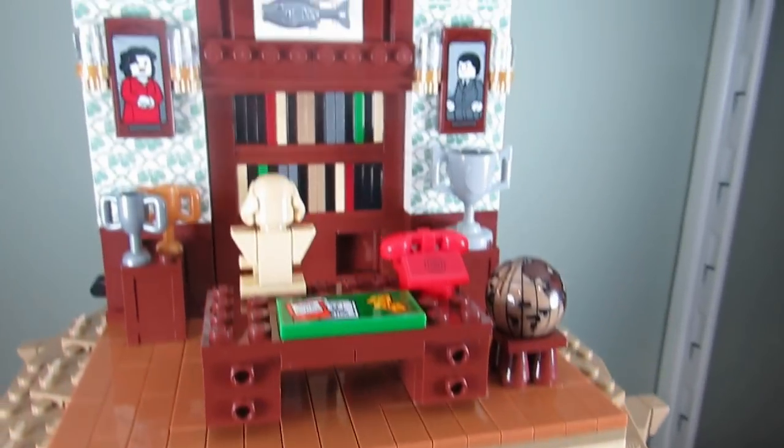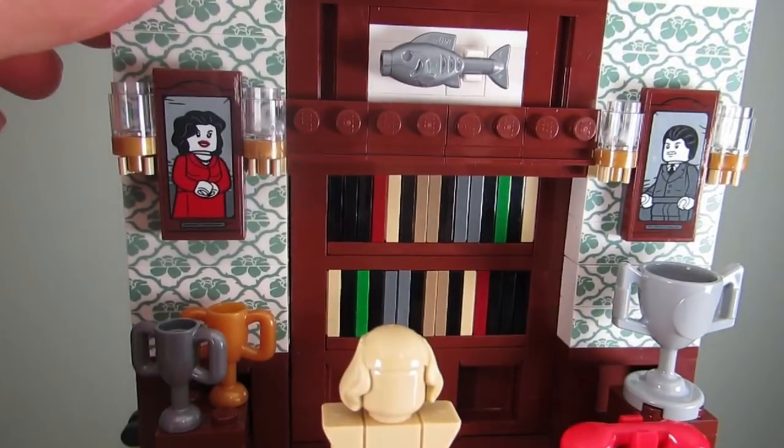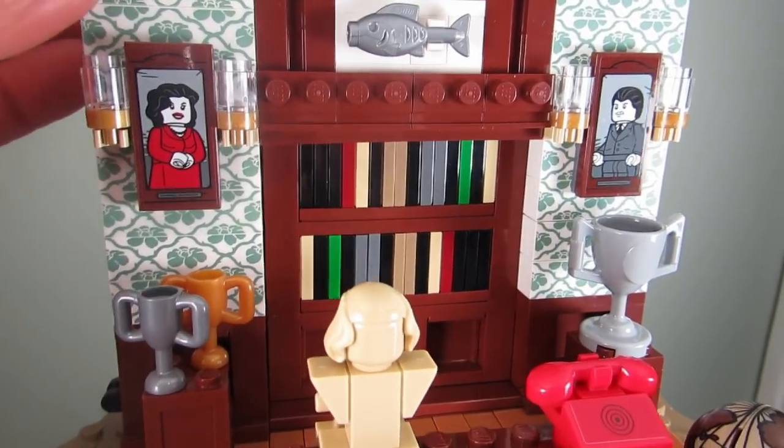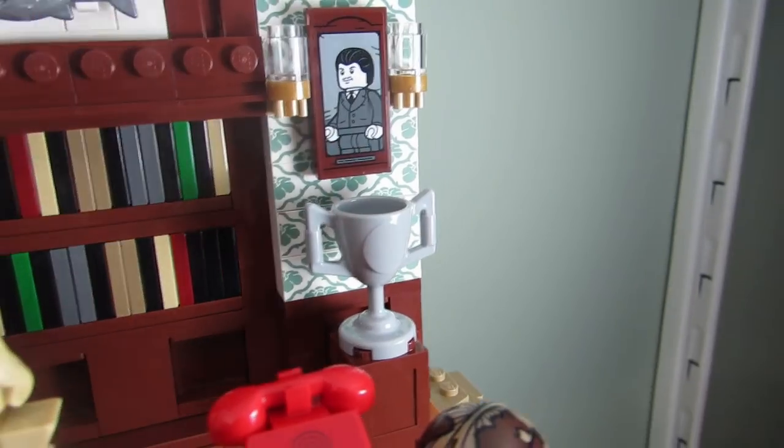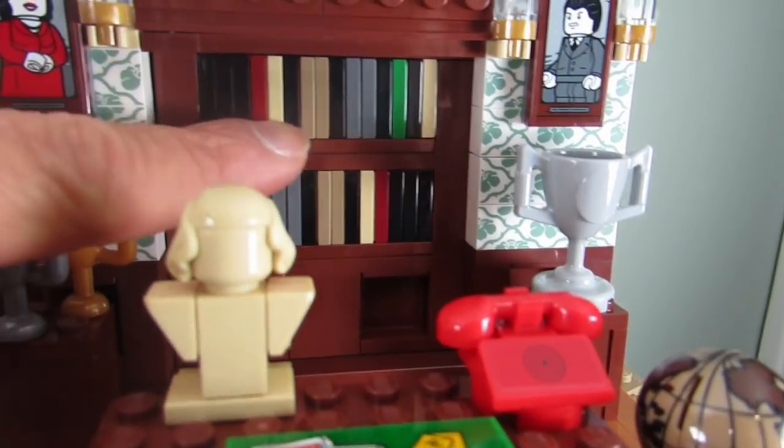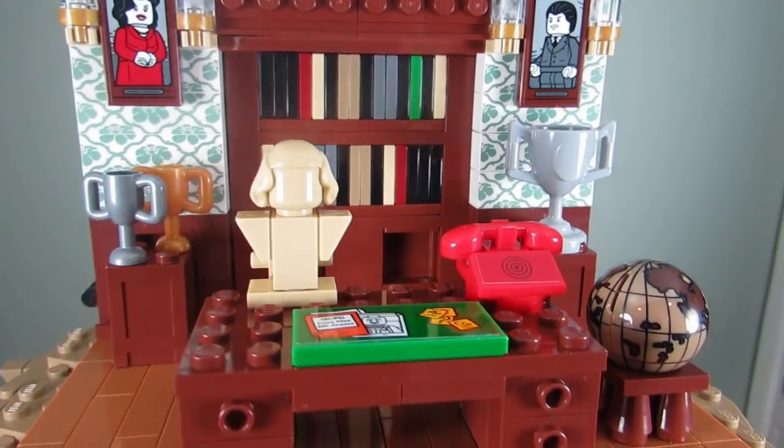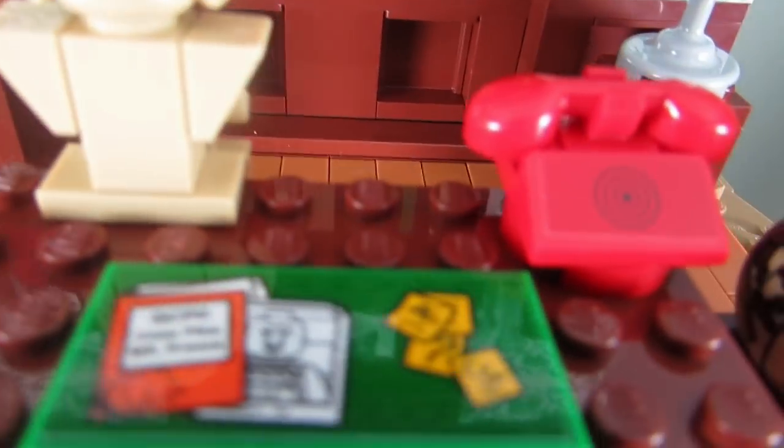And then if you look up here we have the cool Wayne Manor. These are all printed bricks here, so not stickers which is very cool. These are stickers, we got I guess Mr. and Mrs. Wayne. And I like how they did the books here, these are all tiles that are just on sideways. We have the bat phone over here.